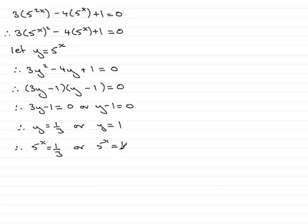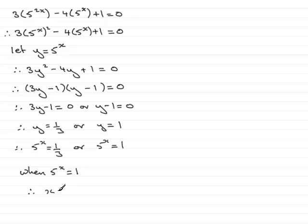Looking at these two equations, I'm going to start with the second one, purely because this is an obvious answer. When 5 to the power x equals 1, anything to the power 0 will equal 1. So x is clearly going to be 0. So x equals 0 — that's one of the solutions.